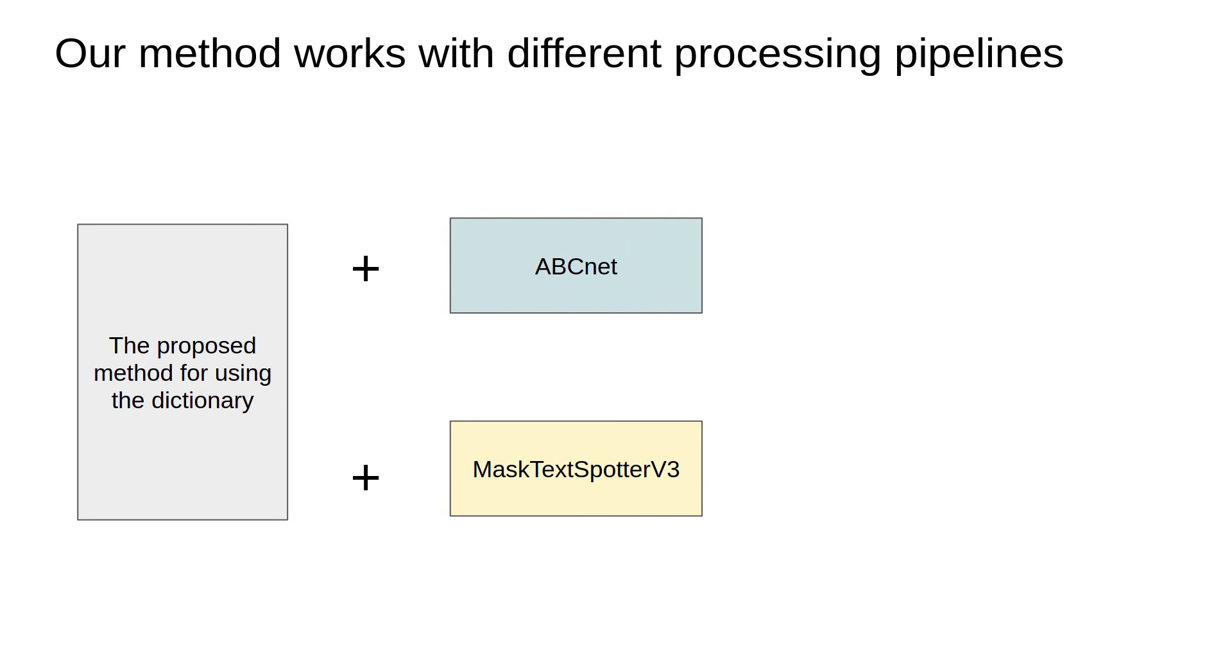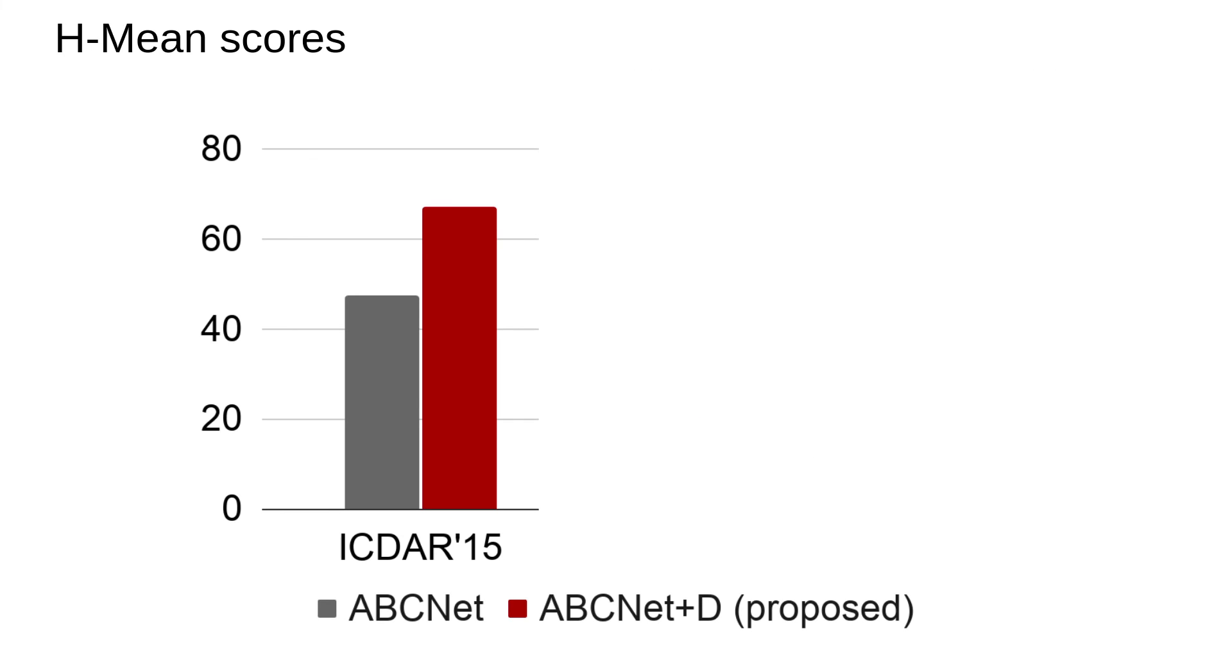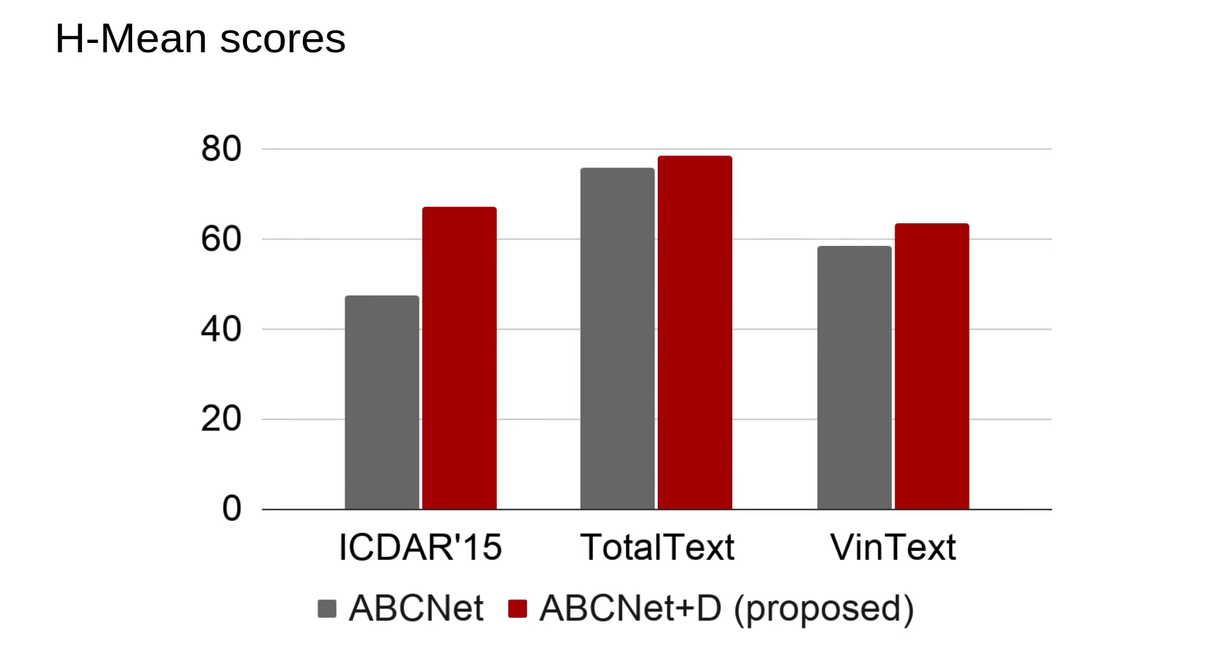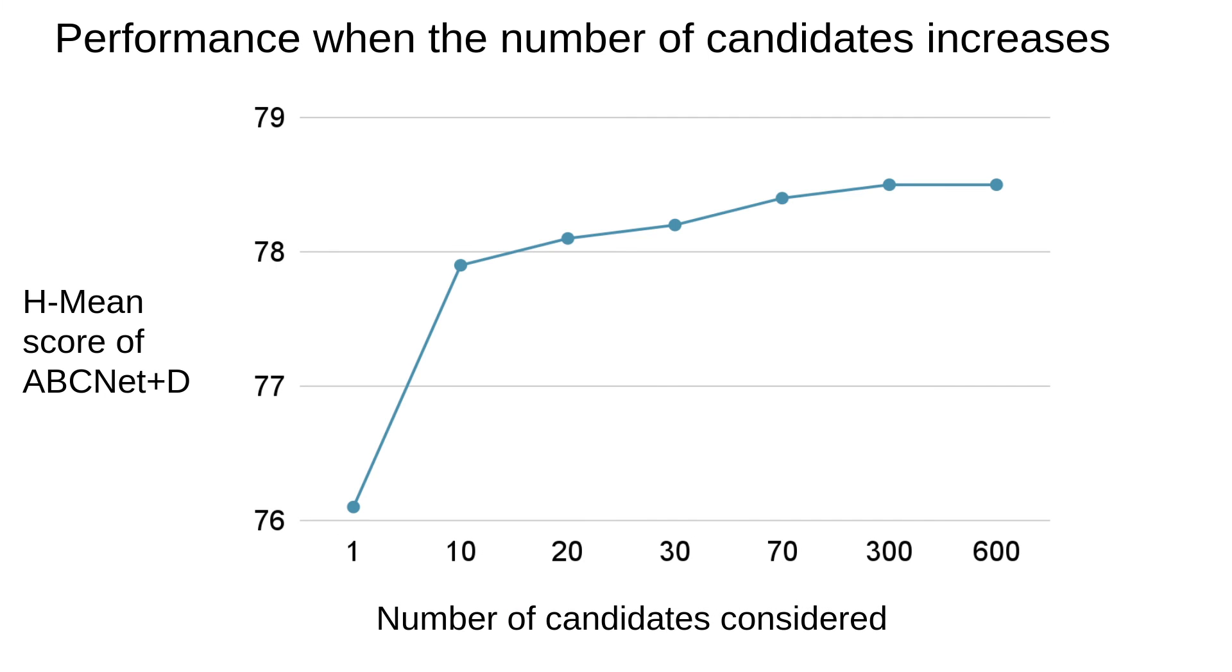We name the corresponding methods as ABCNet+D and MaskTextSpotter v3+D. The experiment results show that our proposal improves ABCNet on ICDAR 15, Total Text, and VinText. One more thing, when the number of candidates considered increases, the performance of model goes up as well.